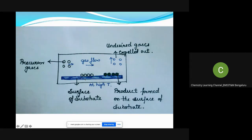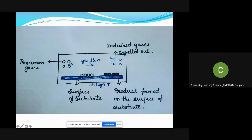We are maintaining very very high temperature. Once the precursor molecules come and sit on the surface of the substrate, these precursor gas molecules will undergo change at the extremely high temperature maintained in the reaction chamber. When they undergo change, they will form the product, which is also adsorbed on the surface of the substrate. During the course of the reaction, if any undesired gases are formed, the carrier gases will push them out of the reaction chamber.